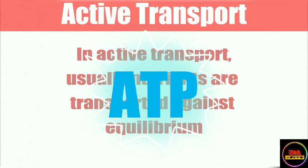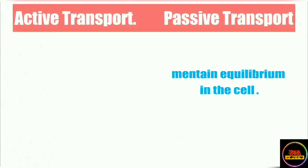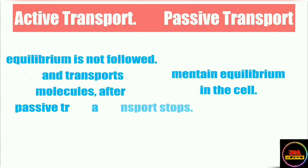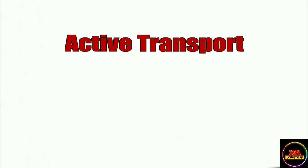So the third difference is that passive transport maintains equilibrium between gaseous molecules, liquid molecules, and nutrients in the cell, whereas active transport is responsible for transporting molecules against equilibrium. Active transport is further divided into two types: primary active transport and secondary active transport.